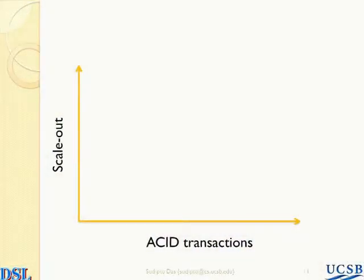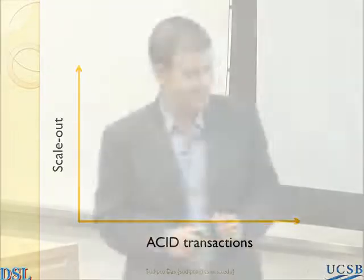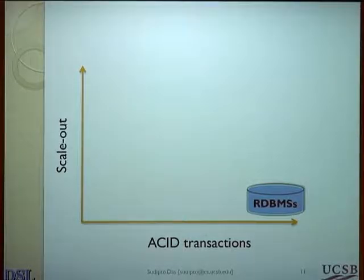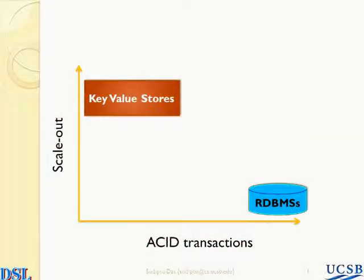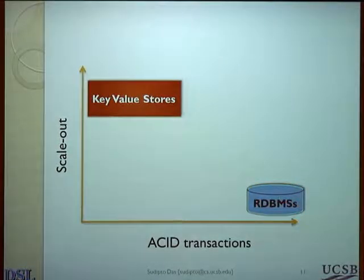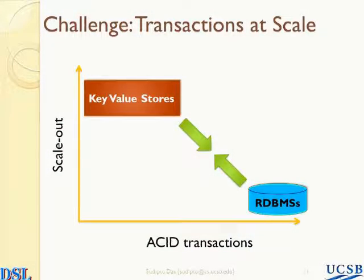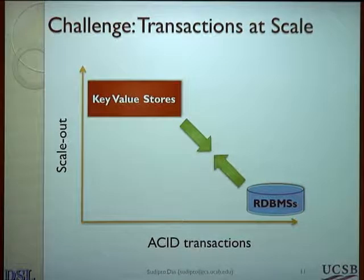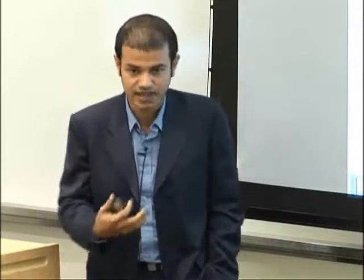If you view it as two different axes — scale-out being one axis and ACID transactions being the other — on one hand we have relational databases that give good functionality and strong ACID transactions but are not very amenable to scale-out. On the other hand, we have key-value stores that give you scale-out to probably thousands of nodes. The challenge I want to address is bridging the gap between these two systems, because there is a lot of potential to be exploited in the middle space — providing transactions at probably not the scale of thousands, but at the scale of tens of nodes, which spans a lot of different types of applications.